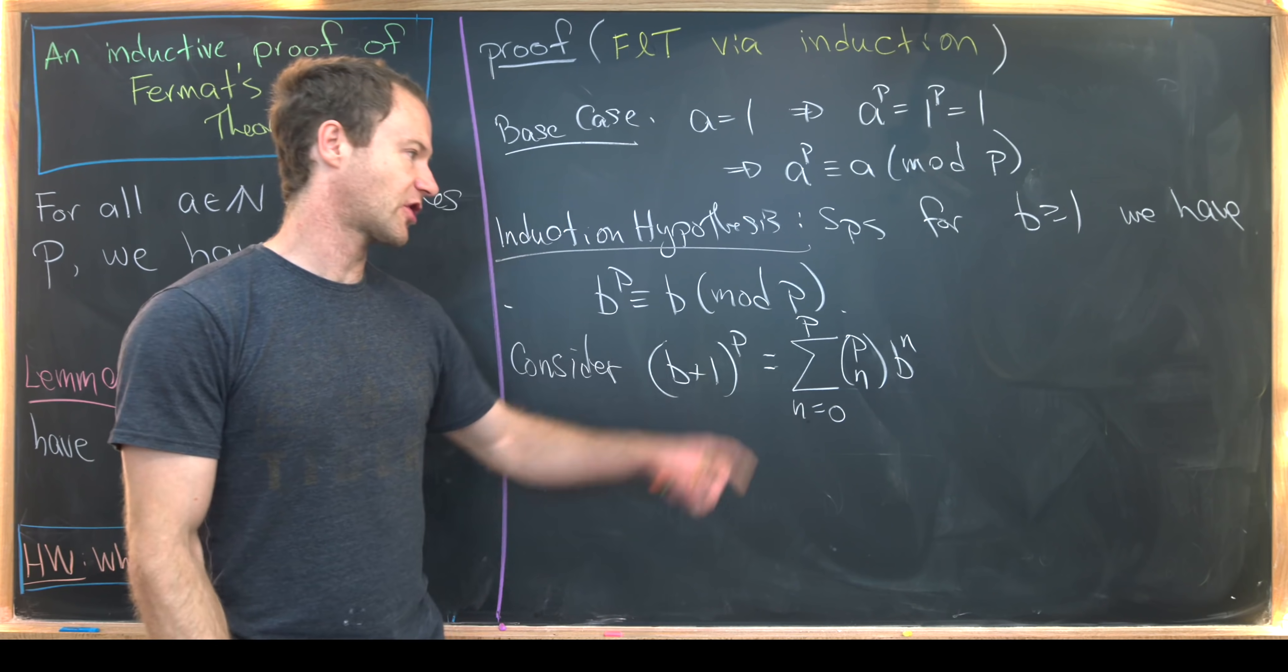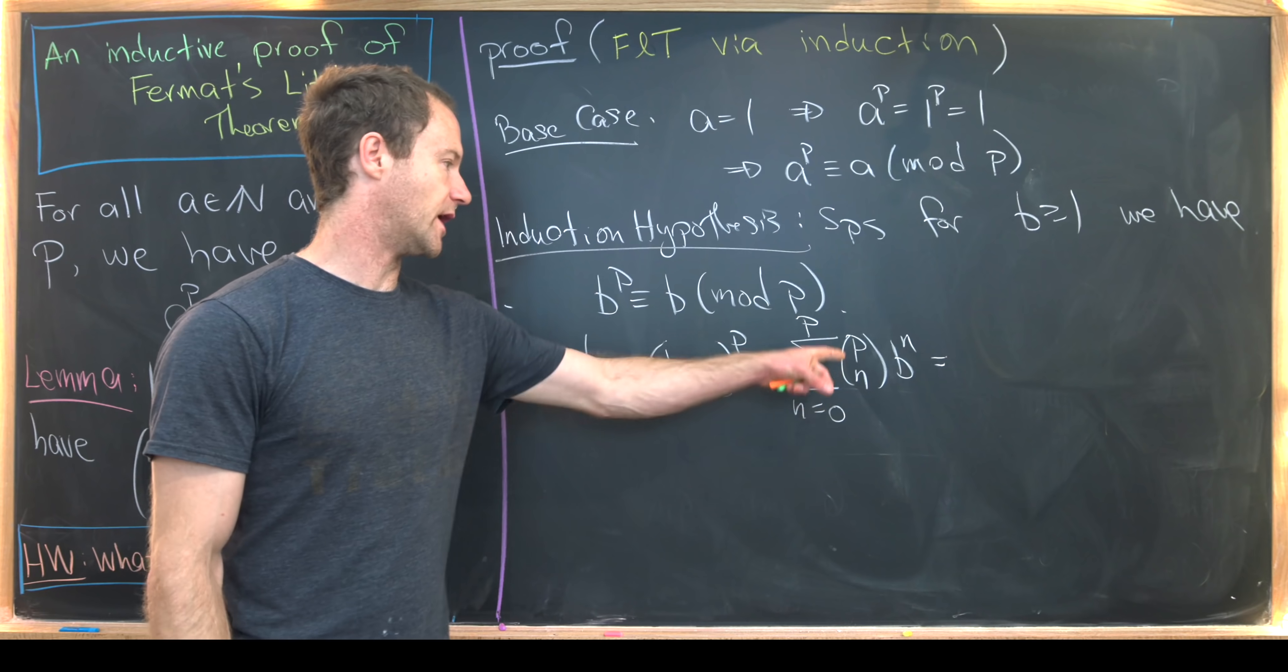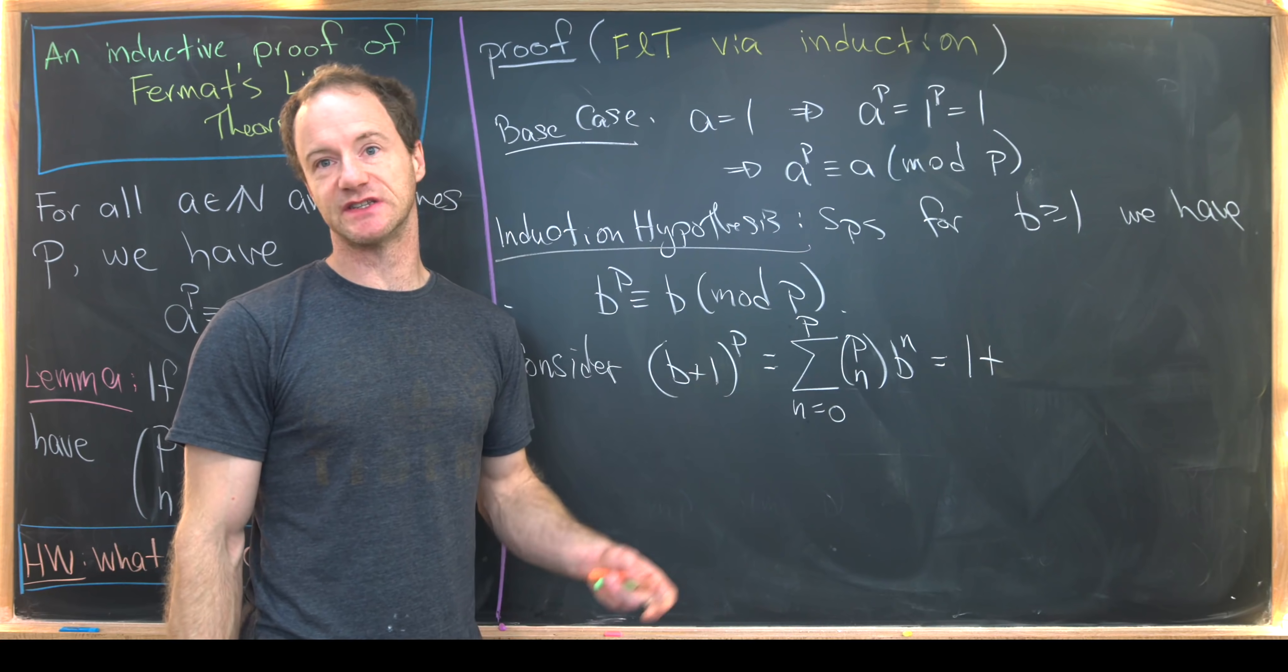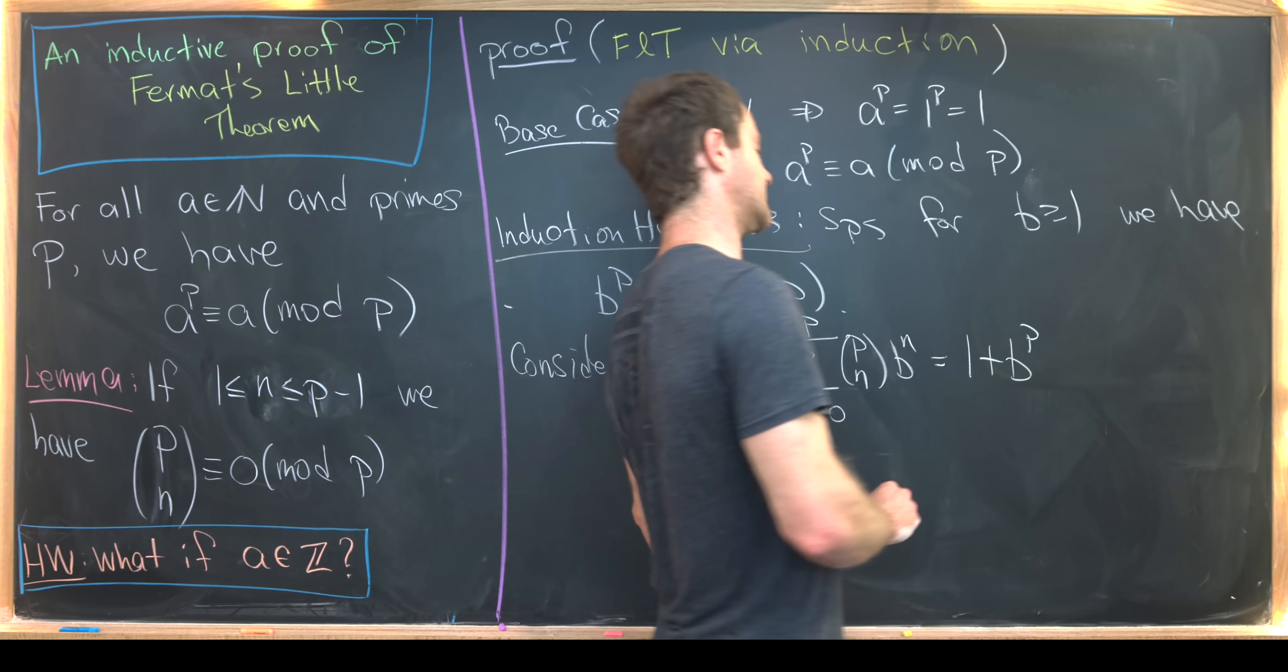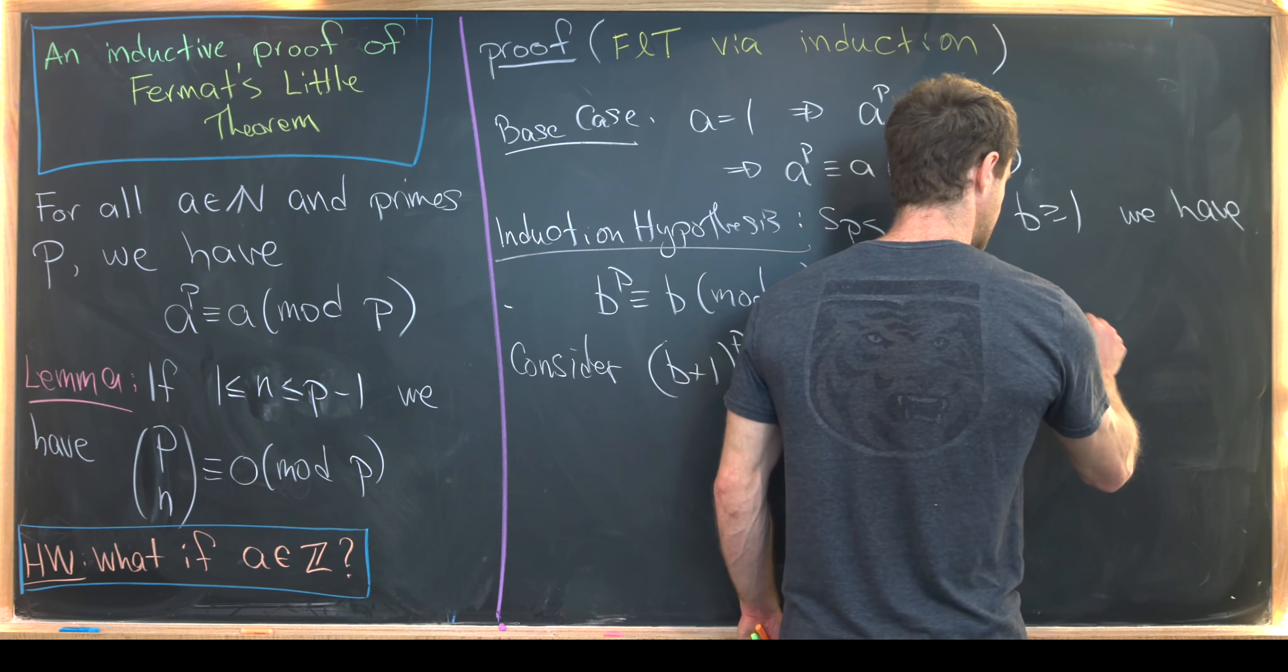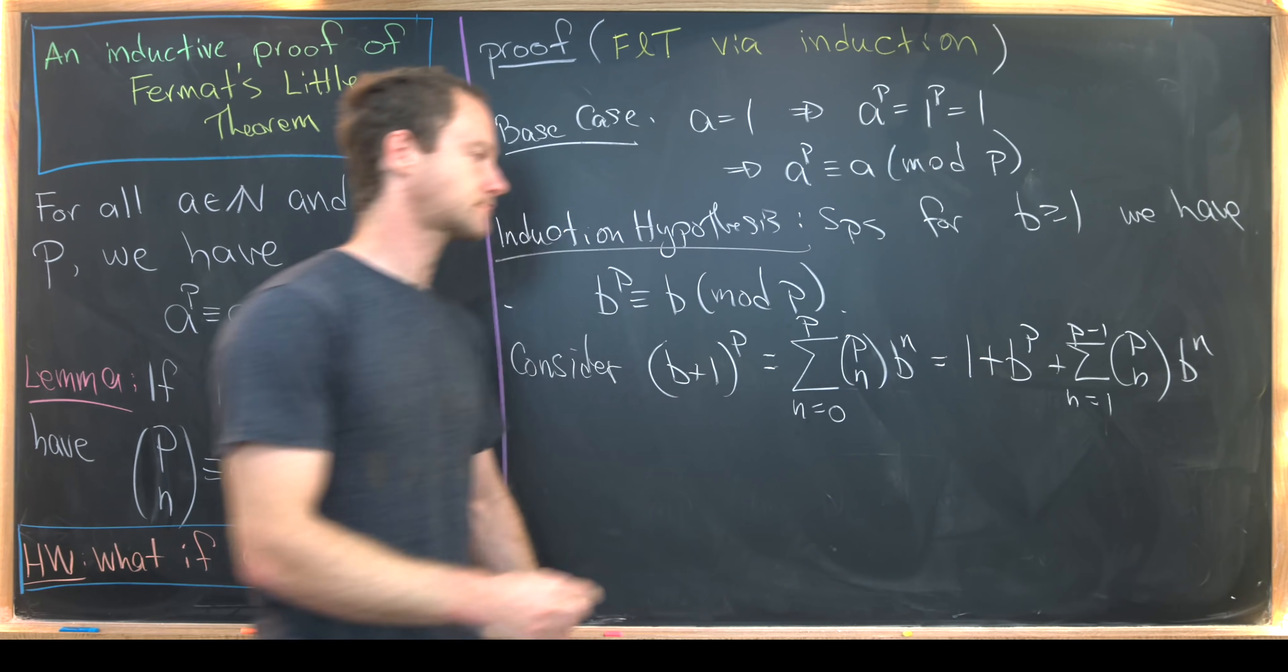Next, I'll take out the 0th term and the Pth term. Notice the 0th term will be P choose 0, which is just 1, B to the 0, which is 1. And then that Pth term is P choose P, which is again 1, and then B to the P. So I've got 1 plus B to the P plus the sum as N goes from 1 up to P minus 1 of P choose N, B to the N.